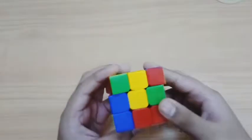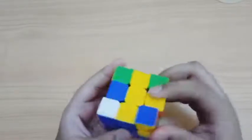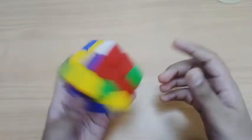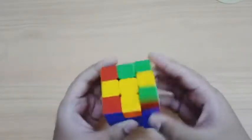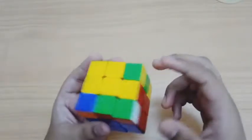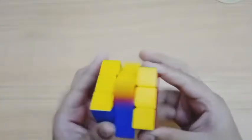Now the next step is to orient the edges. These two are the only misoriented edges. Yeah, I have oriented them. And now I can solve the rest of the cube like this, and then PLL.